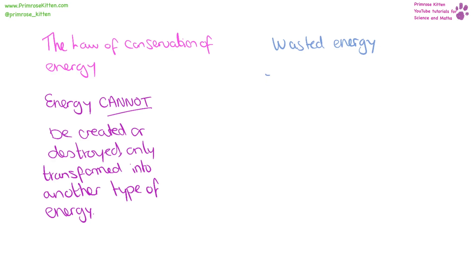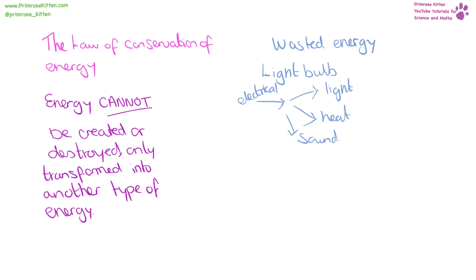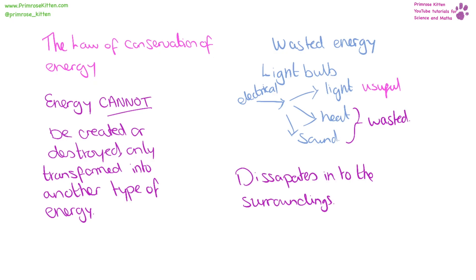While energy cannot be created or destroyed, it can be wasted. Wasted energy is any energy that comes out of a situation that we didn't intend for it to be there. For example, in a light bulb we have electrical energy going in; this is converted into light, heat and sound. The light is the useful energy, whereas the heat and the sound are wasted energy. The wasted energy dissipates into the surroundings — it spreads out so much it can't be collected and used. It's not gone, it's still there, it's just spread out, it's dissipated.